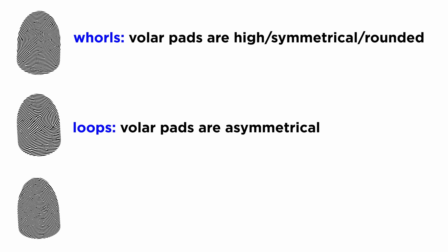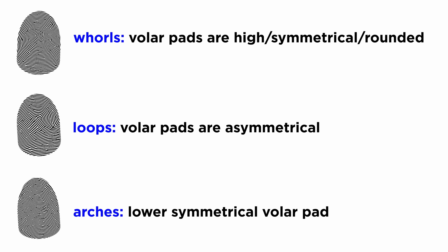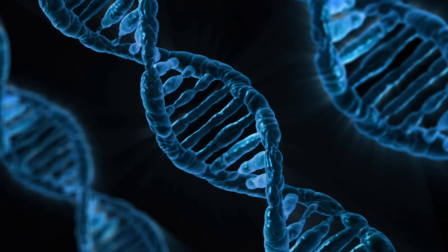Loops are formed when the volar pads are asymmetrical, or when the bumps lean to one side more than the other. In a loop pattern, it appears as if the ridges are flowing from a higher point to a lower point, because of the asymmetrical volar pad. The next pattern is the arch-shaped pattern. Arches are formed on a lower but symmetrical volar pad. The genetic makeup of an individual does play a role in the overall shape and size of these patterns.